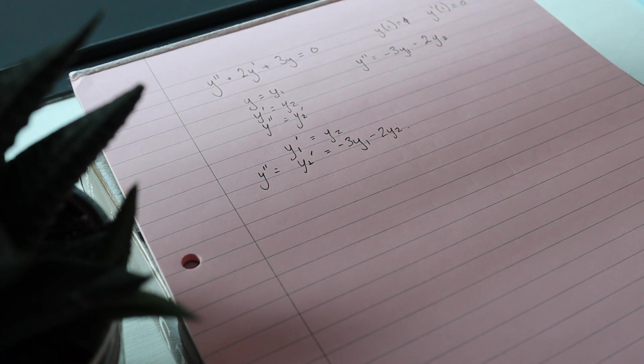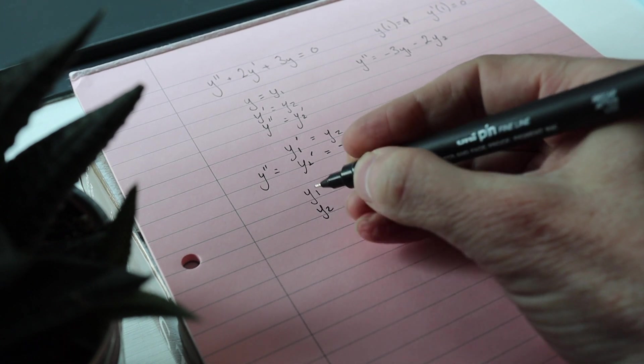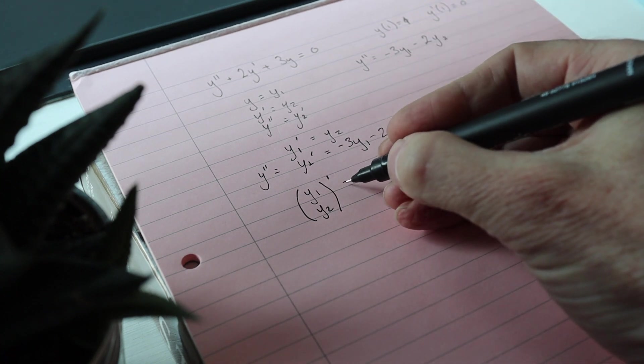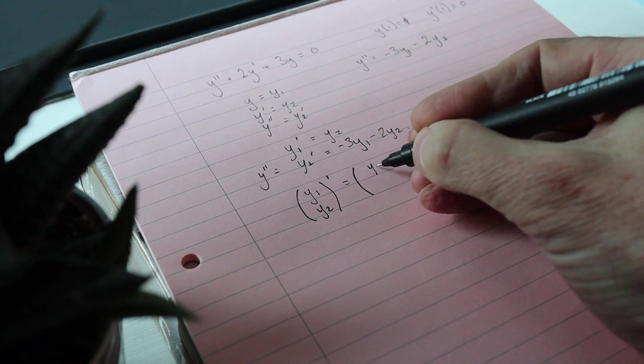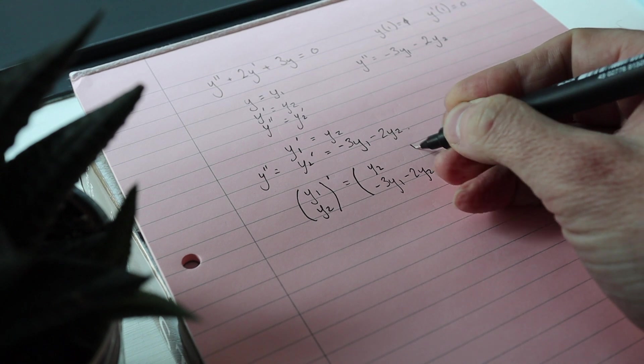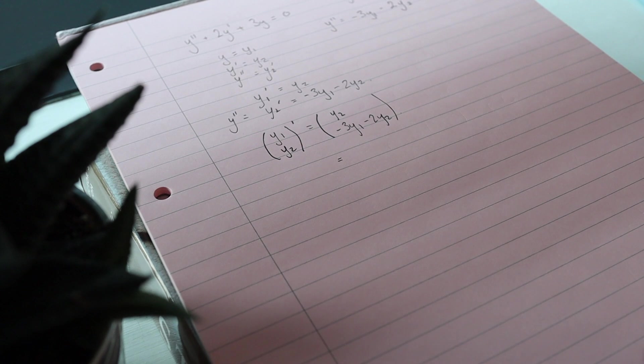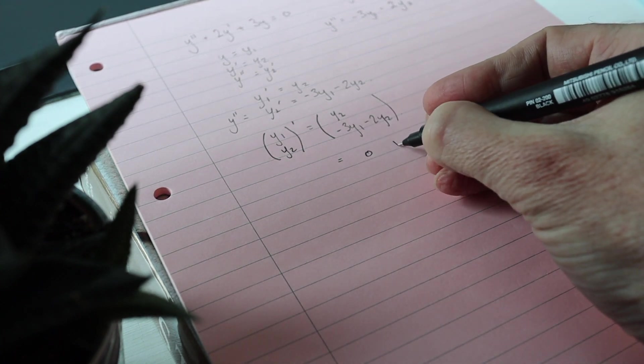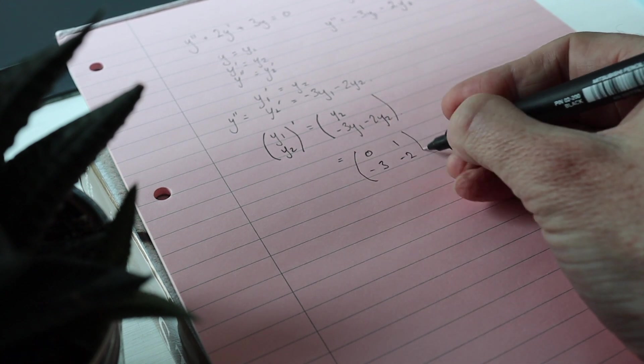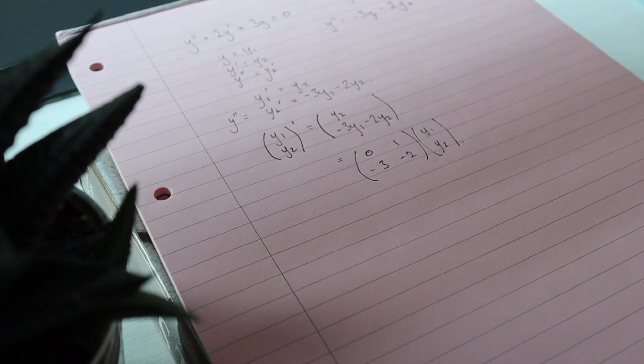One thing I could do is write this in matrix form. I'm going to need that later so I'm going to do it although I don't need to for this part of the question. So it's that and I can write that as 0, 1, negative 3, negative 2 times y1, y2. And that's it.